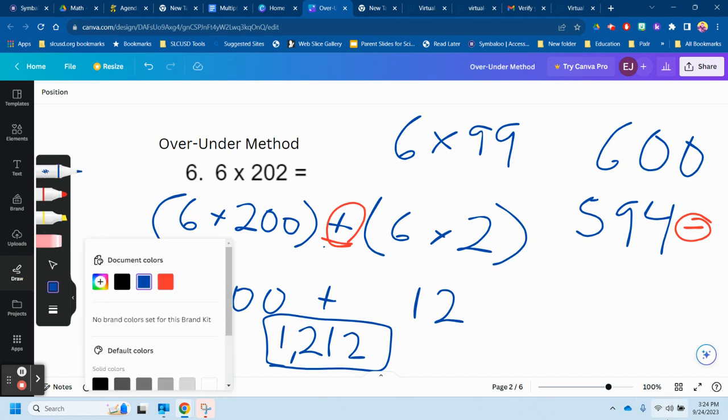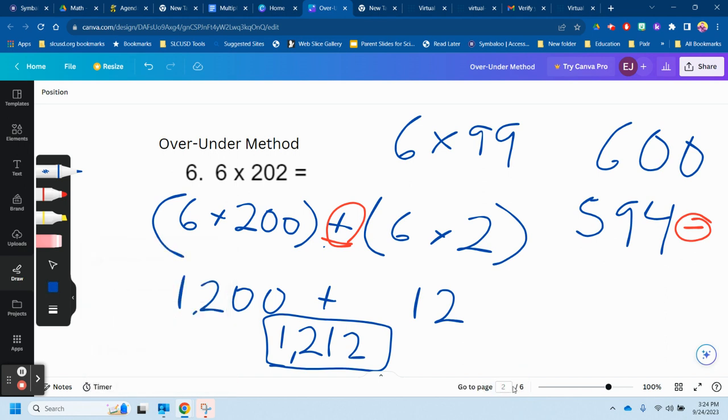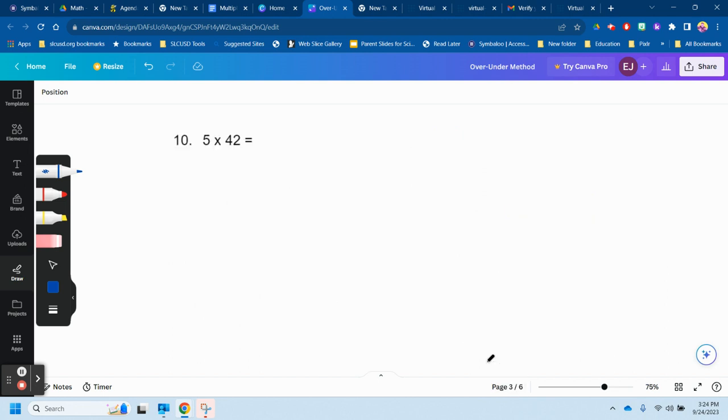All right, let's move on here. So that's number 6. I'll do a couple more here. So on this one, 5 times 42. What I'm saying here is if you know 10 times a number, that's super easy. So like 34 times 10 is 340, and then you could say half of that would be 170. In this case, 10 times 42 is 420. So if 10 times 42 is 420, 5 times 42 is going to be half of this, 210.